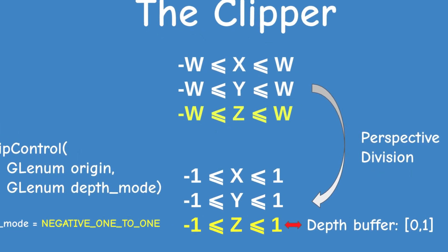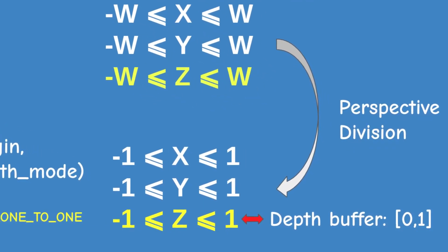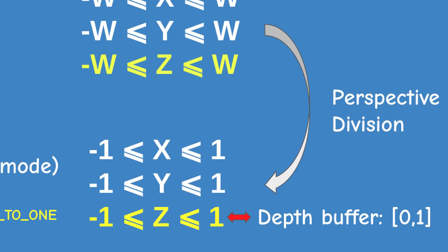Another thing you may be wondering about is how does the Z range of minus 1 to 1 work with the depth buffer, whose range goes from 0 to 1? The answer to that lies in the next two stages.